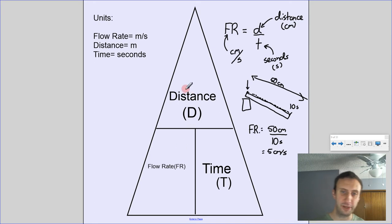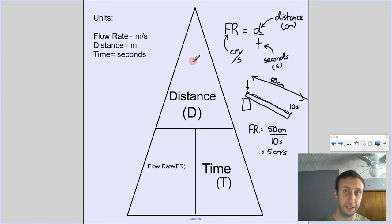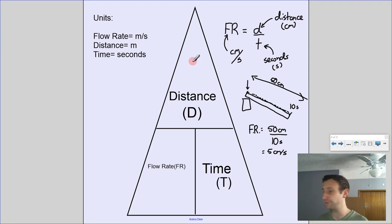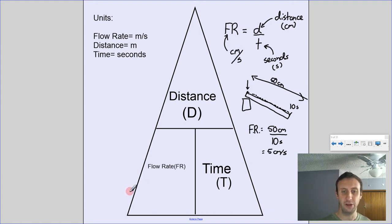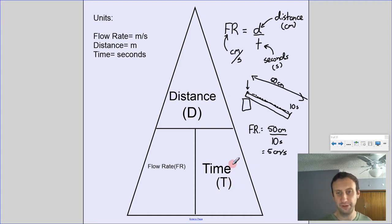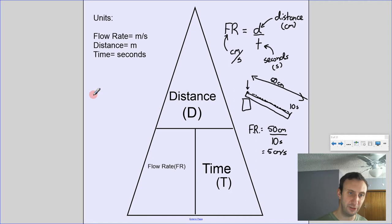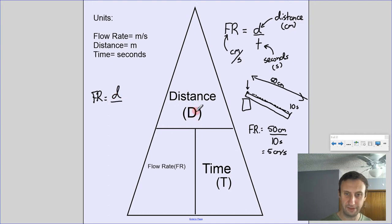The triangle arrangement is a method to manipulate the formula without algebra. We fill it in left to right: flow rate equals distance divided by time. So FR = d/t, where d is on top and t is on the bottom. Time is always lowercase t, and distance is lowercase d — capital T is normally used for temperature.